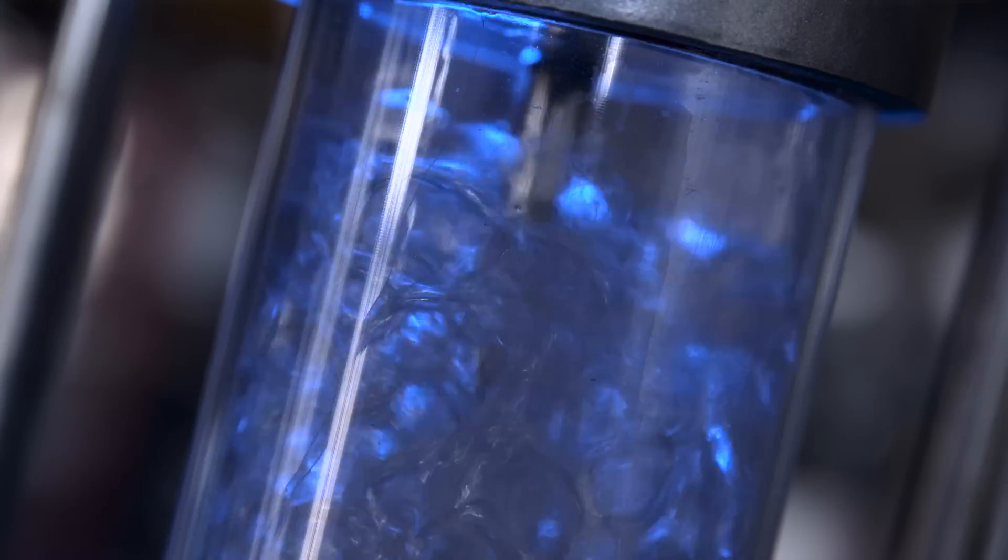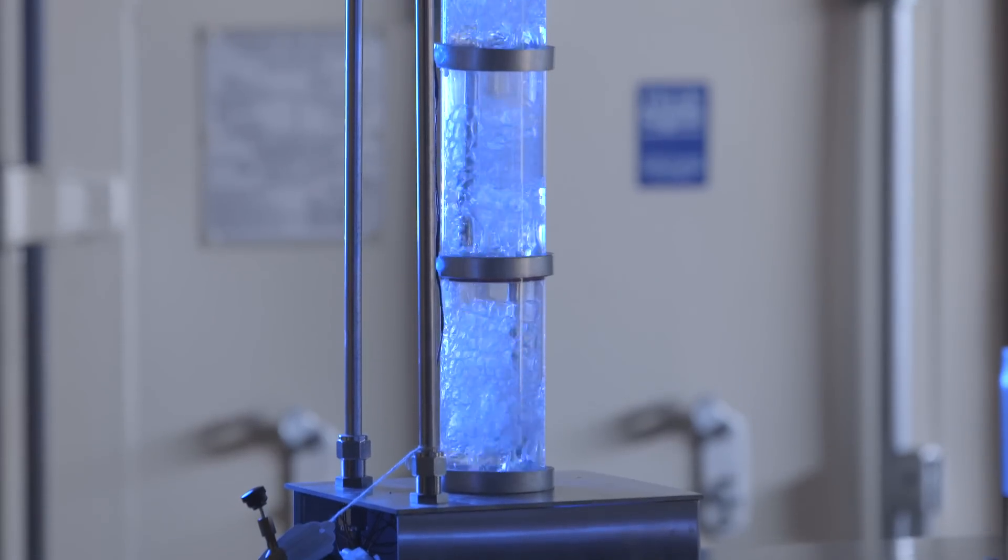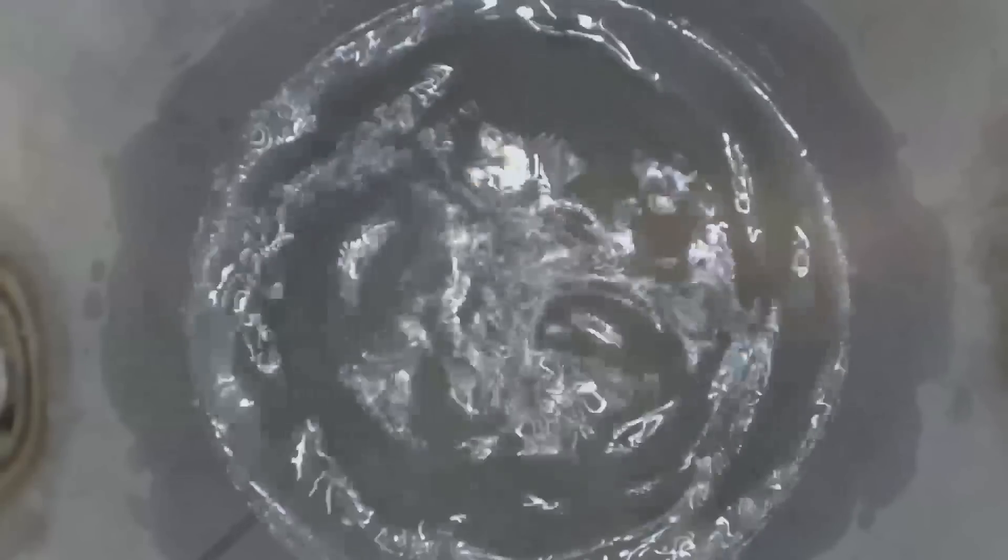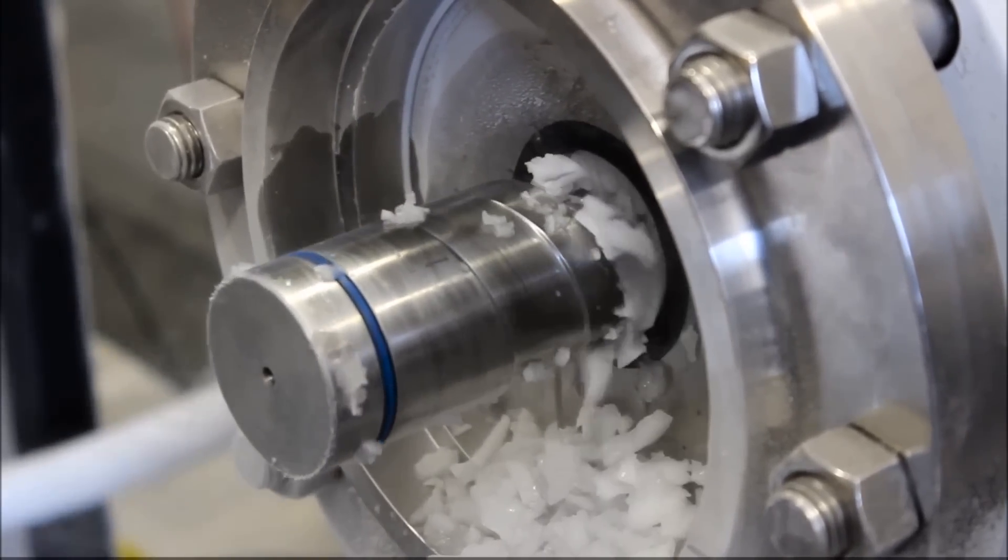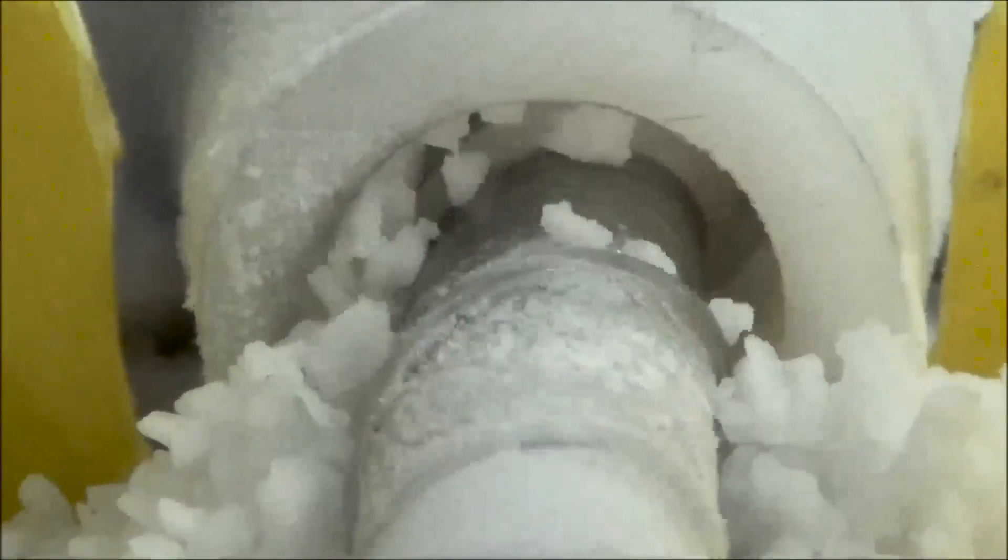The cryogenic carbon capture process works by first cooling the flue gases down to very cold temperatures, about negative 120 degrees Celsius. At that temperature, the CO2 that's in the flue gas has formed a solid. It is, in fact, dry ice. So we then separate the solids from the gases.